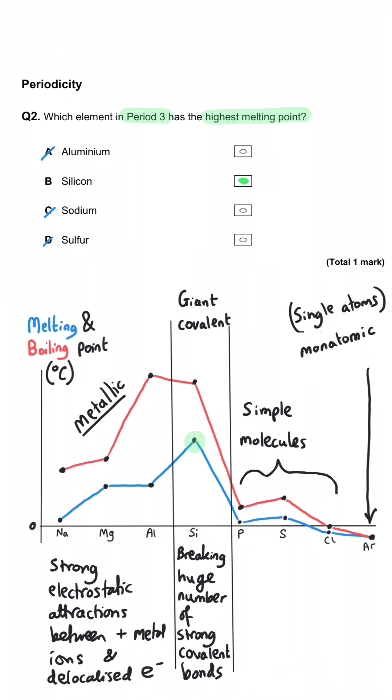And then phosphorus through to argon, they're only connected by van der Waals forces, which are very weak and only require a little bit of energy to break. So far weaker than the other two.